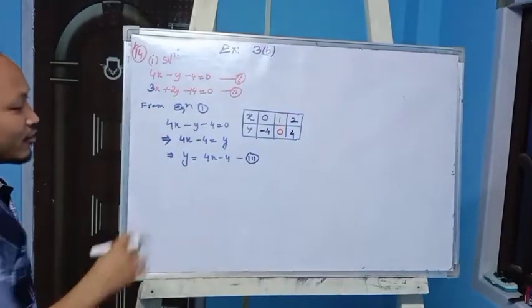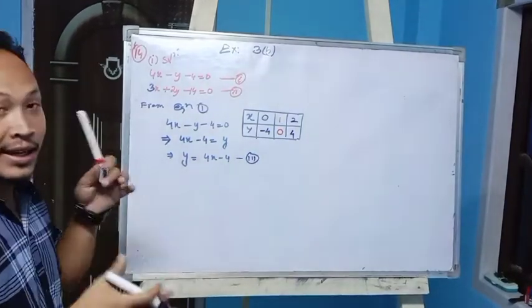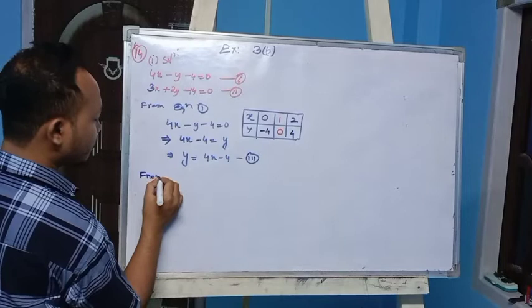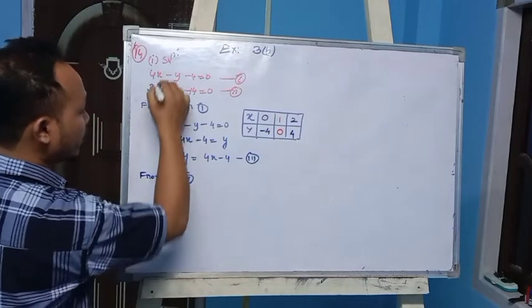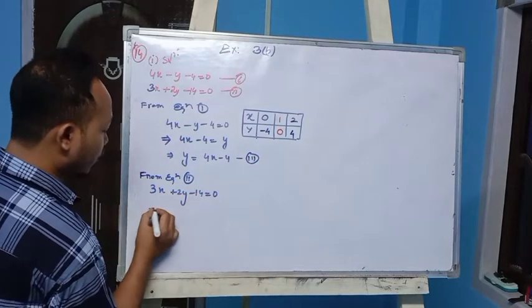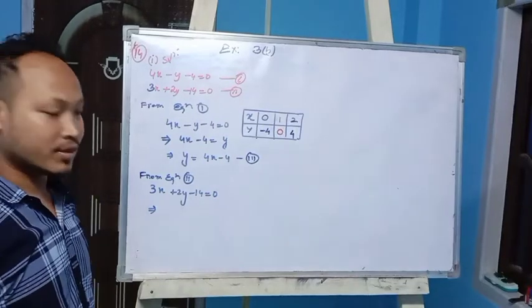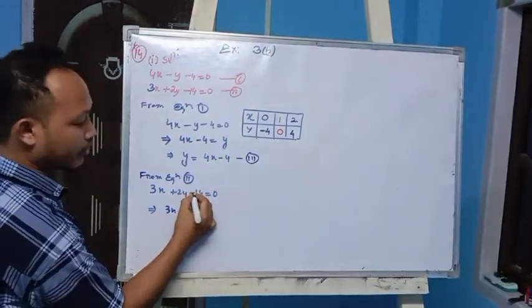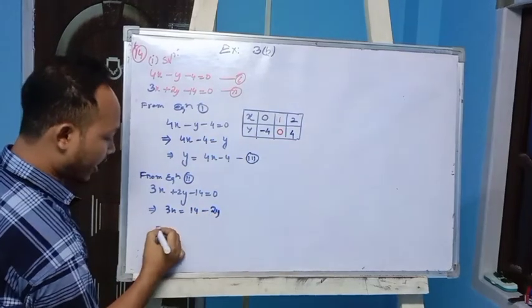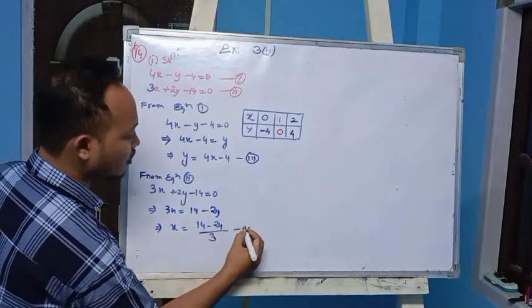Now from equation 2, which is 3x plus 2y minus 14 equals 0, I will solve for x. Rearranging: 3x equals 14 minus 2y, so x equals 14 minus 2y divided by 3. This is equation 4. I will draw a table for this equation.